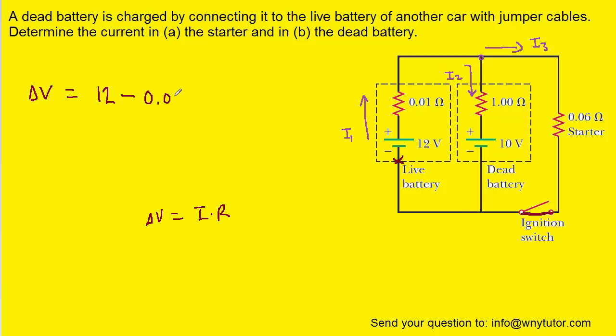Continuing around the outer perimeter, we eventually encounter this resistor. Notice, in this case, we would be moving with the current marked I3. So again, that's a negative potential change. And it will equal the resistance of 0.06 multiplied by the current I3.